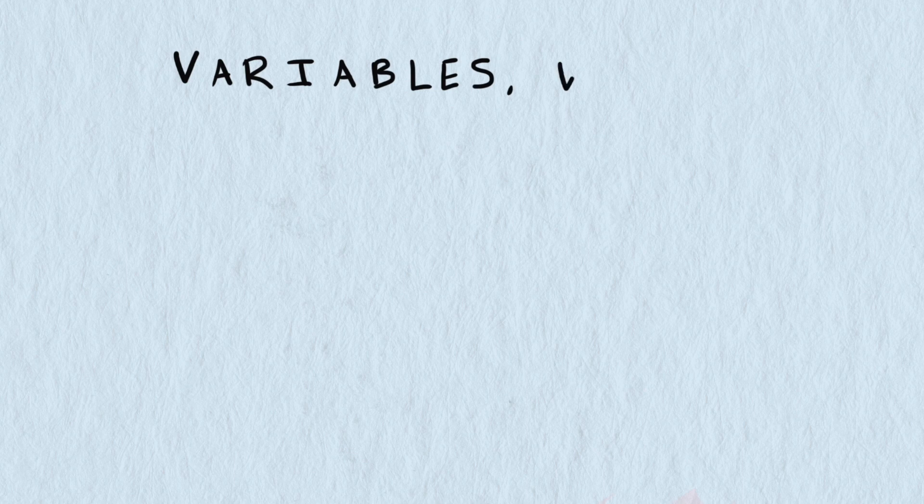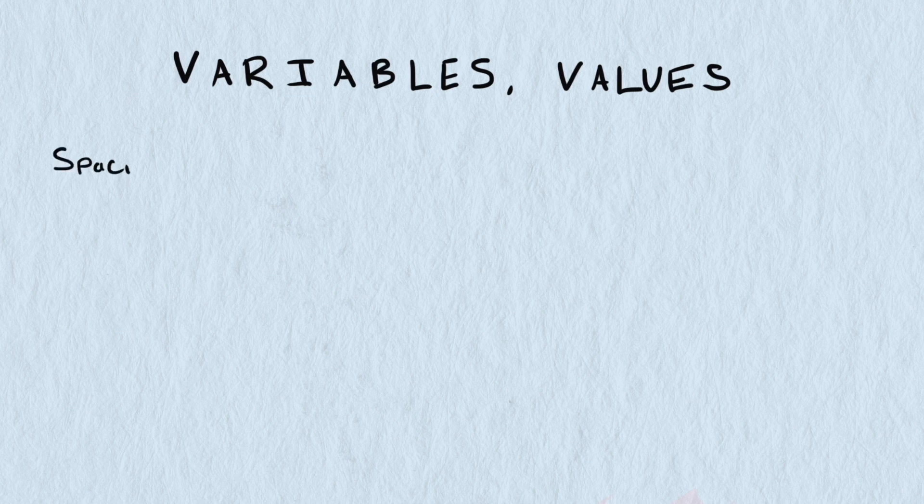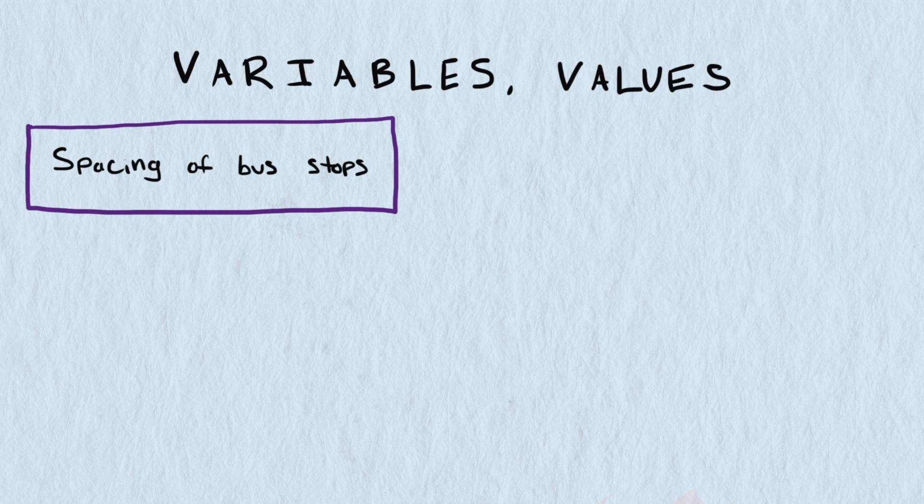There are a lot of variables or values that might be important for us to consider. To start I'm going to pick a reasonable value for any variable except the one we care about the most: the spacing of bus stops. Here are some values I think are important.